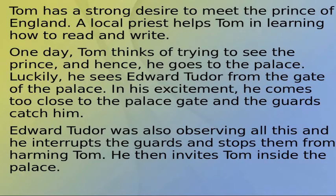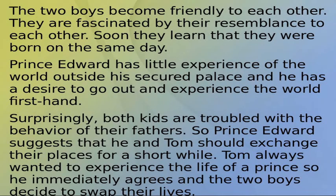Tom has a strong desire to meet the Prince of England. A local priest helps Tom in learning how to read and write. One day, Tom decides to try to see the Prince and goes to the palace. Luckily, he sees Edward Tudor from the gate. In his excitement, he comes too close and the guards catch him. Edward Tudor interrupts the guards, stops them from harming Tom, and invites him inside the palace. The two boys become friendly and are fascinated by their resemblance to each other.